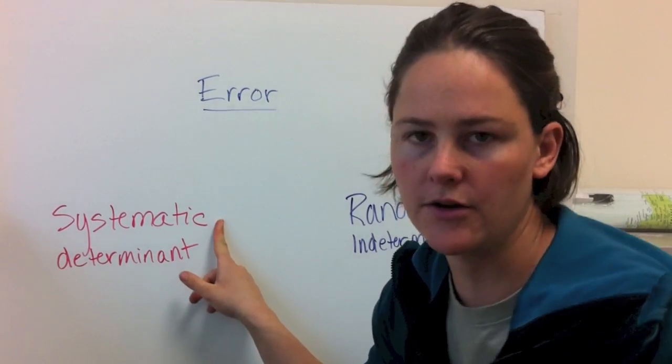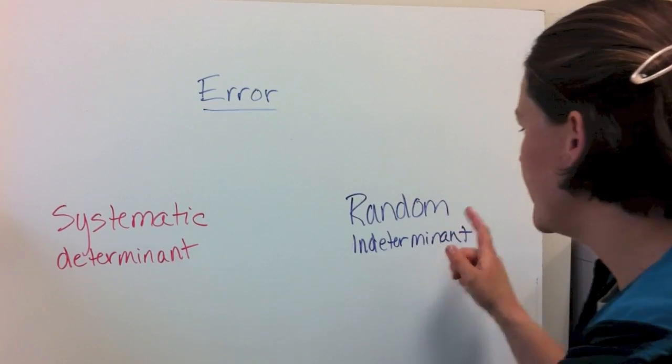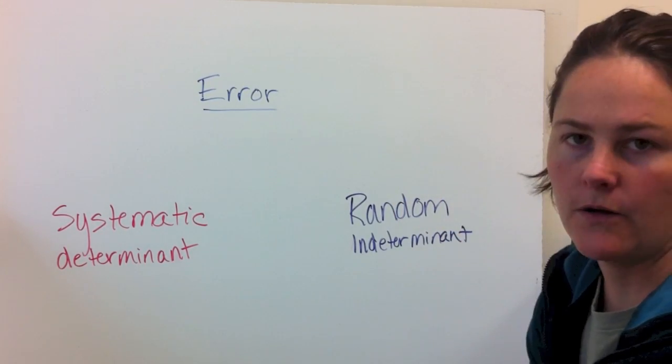So there's two kinds of error. There's systematic or determinant error, which affects all of your measurements in the same way, and there's also random error or indeterminate.